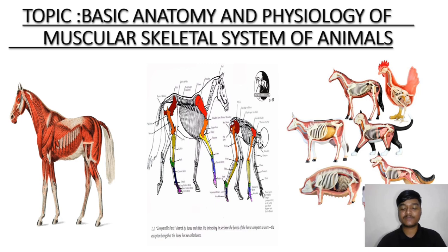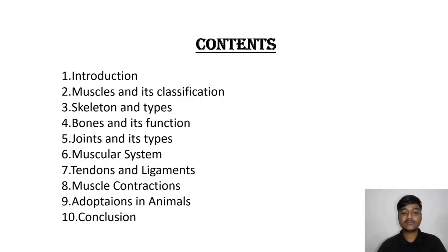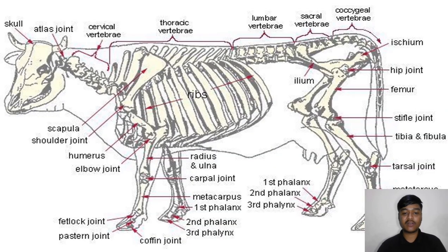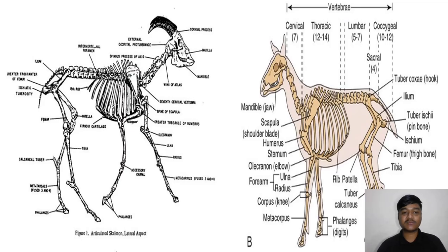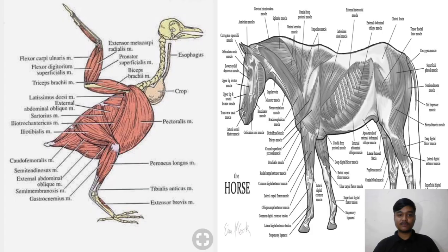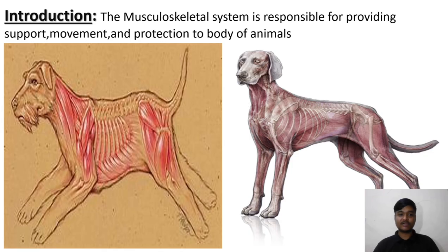The topic is basic anatomy and physiology of the musculoskeletal system of animals. The contents cover: skeletal system of horse, skeletal system of cow, skeletal system of sheep and goat, skeletal system of chicken, muscle system of chicken, and muscle system of horse.